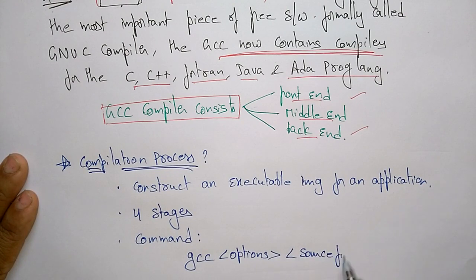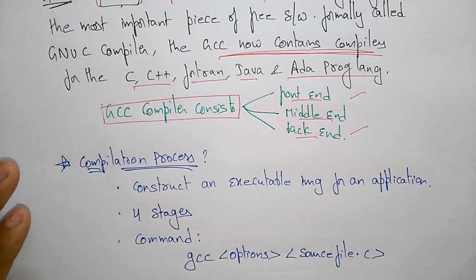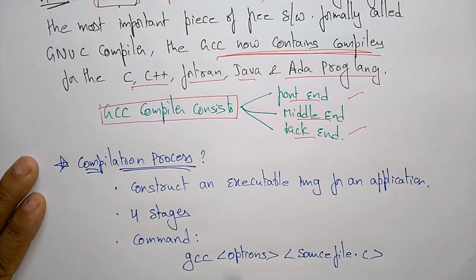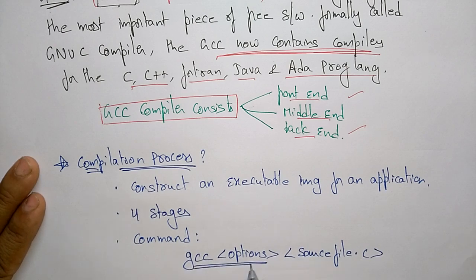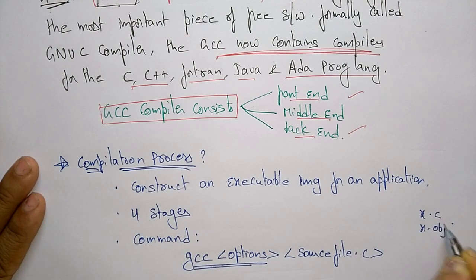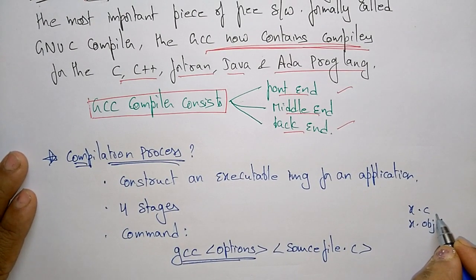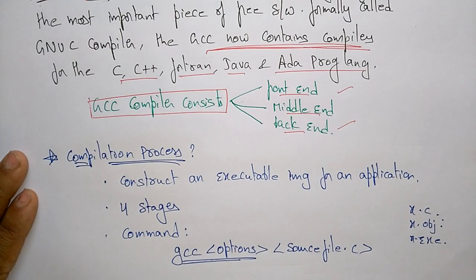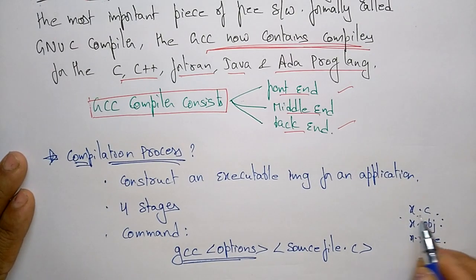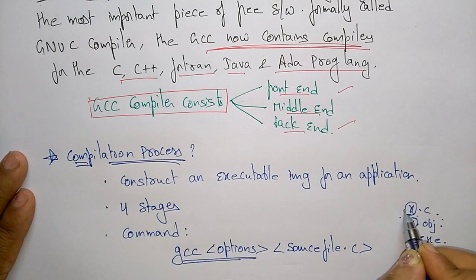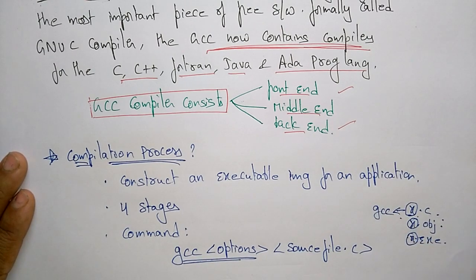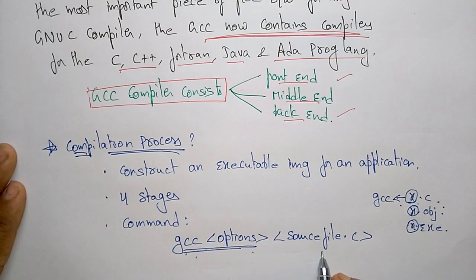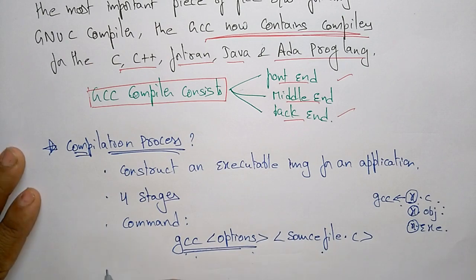For every command you have to write GCC in front of it. The syntax is: GCC options source-file.c. For example, if X is a file name, you write X.c as the source file, which after compiling becomes X.obj, and then .exe as executable code. Before every source file name you include GCC.